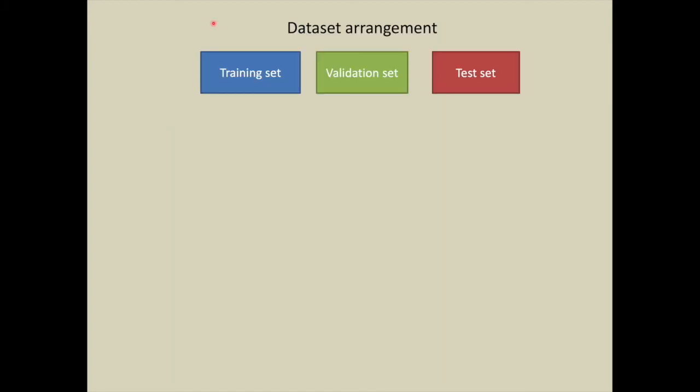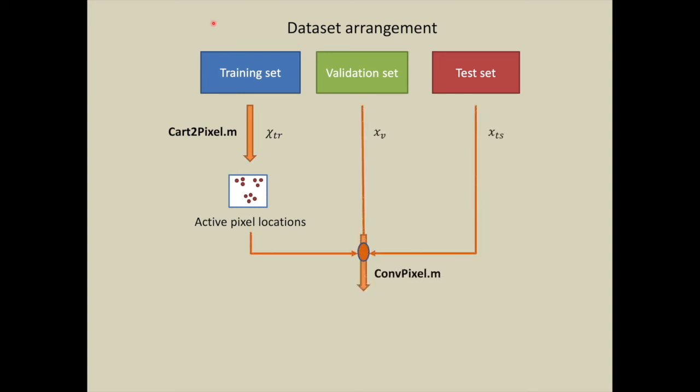Let us see dataset arrangement. To evaluate the performance of DeepInsight method, we subdivided data into training set, validation set, and test set. Entire training set is used to obtain active pixel locations. Thereafter, non-image samples of training set are converted to image samples. Validation set and test set are also converted to image sets.